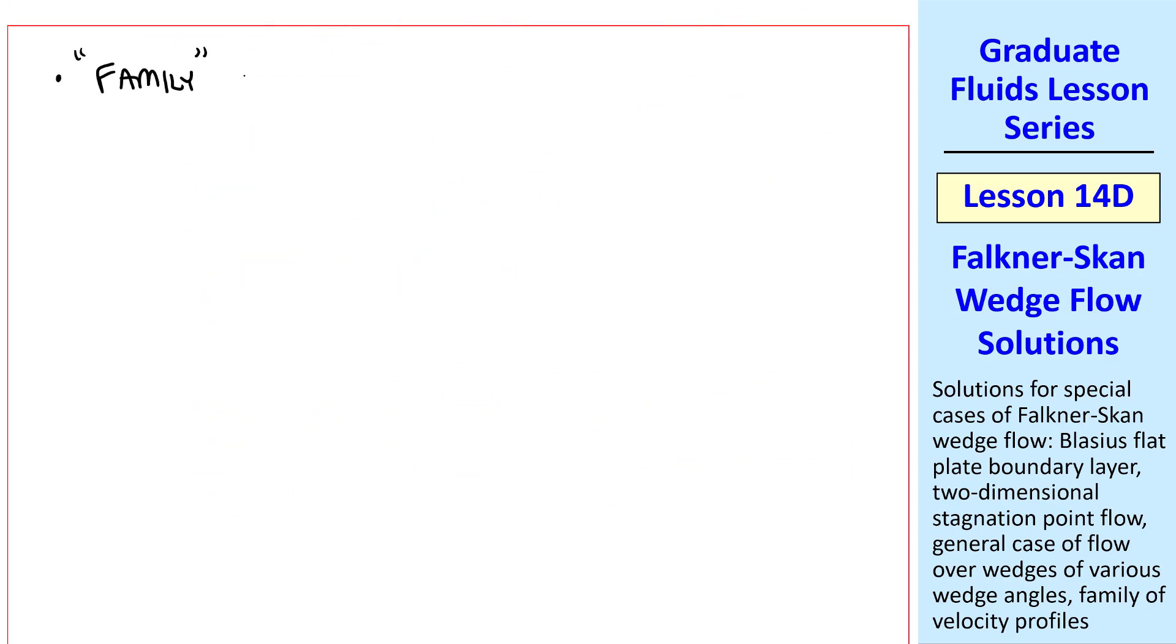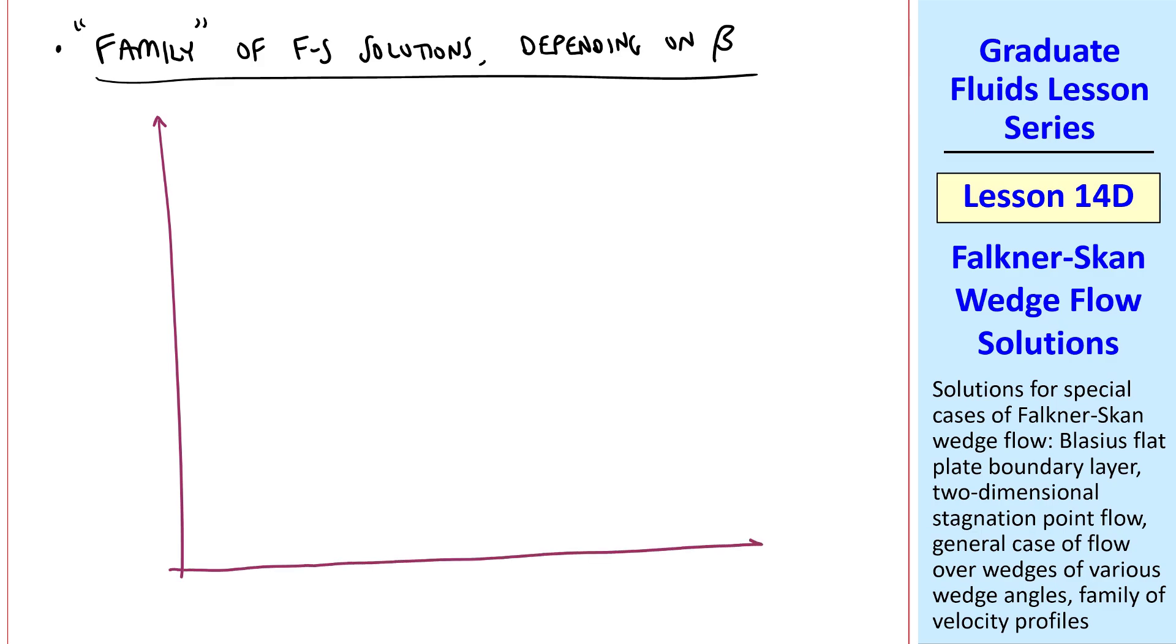Finally, let's sketch the family of Falkner-Skan solutions, depending on the choice of beta, as we've been discussing. I usually leave this as a homework problem for the students, so I'll just do some hand sketches here, where we'll plot similarity variable f prime as a function of eta, and eta goes to about 5. Let's start with a high value of beta, where all of these profiles asymptote to 1, since u equals capital U at the edge. This would be the case where beta is between 1 and 2.